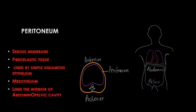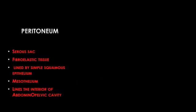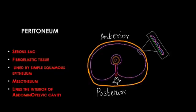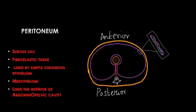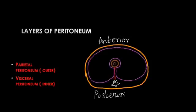This serous sac is lined by the serous membrane, which is fibro-elastic tissue. This lining serous membrane is called the mesothelium. The mesothelium is nothing but a single layer of squamous cells resting on the basement membrane — it is simple squamous epithelium resting on the basement membrane. So this lining part of the peritoneum, the serous membrane, is otherwise called the mesothelium, and it lines the inner surface of the abdominal pelvic cavity.